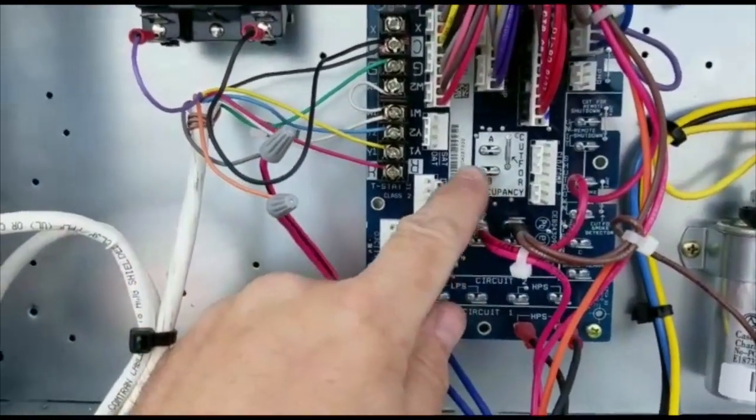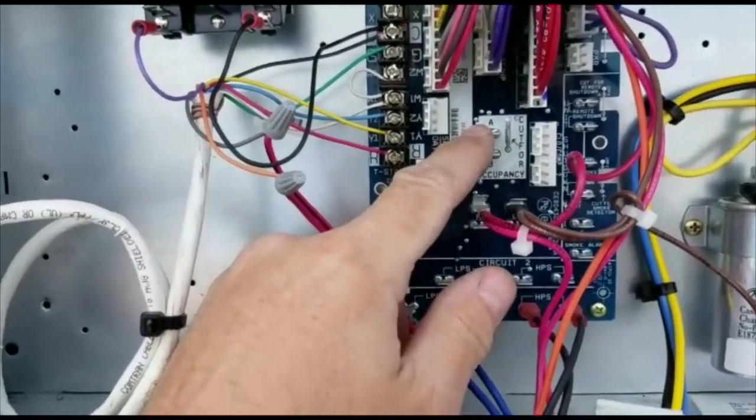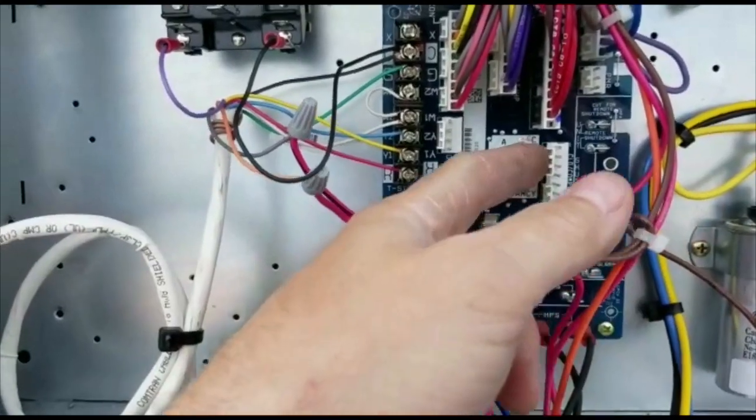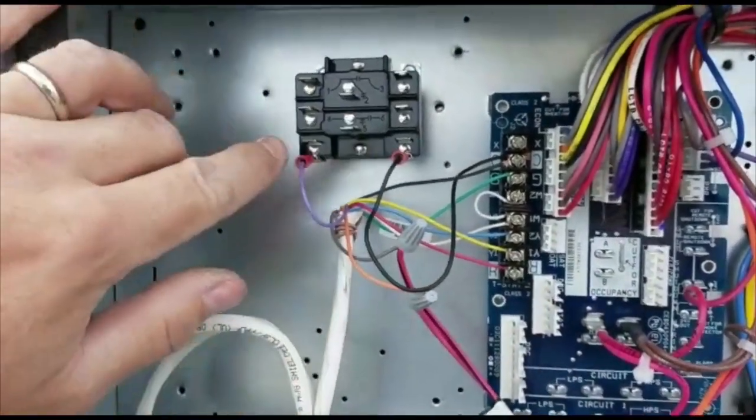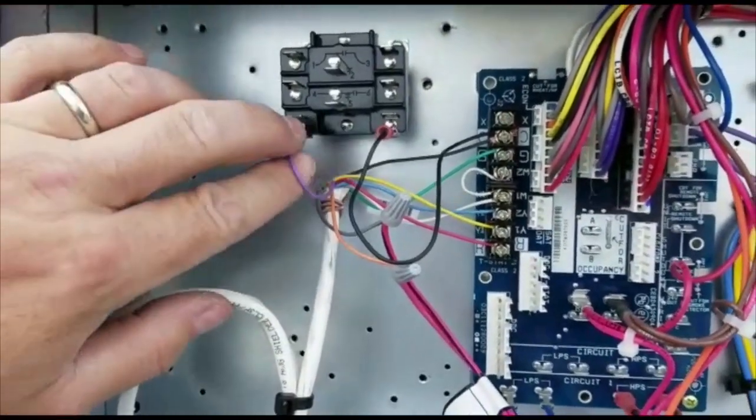...it says 'cut for occupancy.' All this is, it's 24 volts out of A into B. You cut this jumper and then what we do is go up here to the relay. This purple wire is coming off of the A terminal...